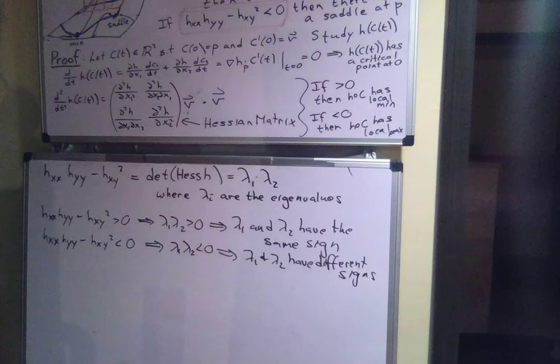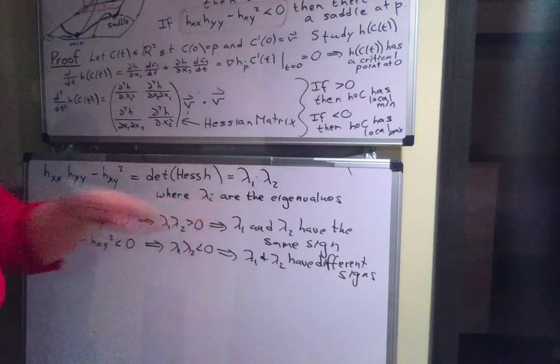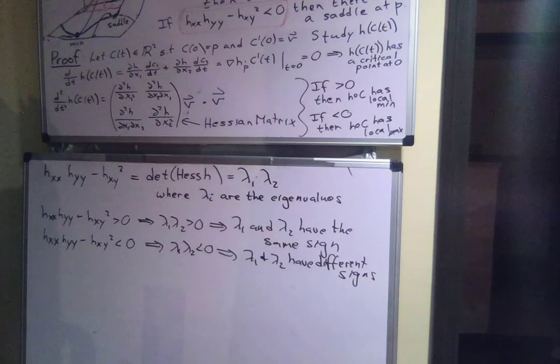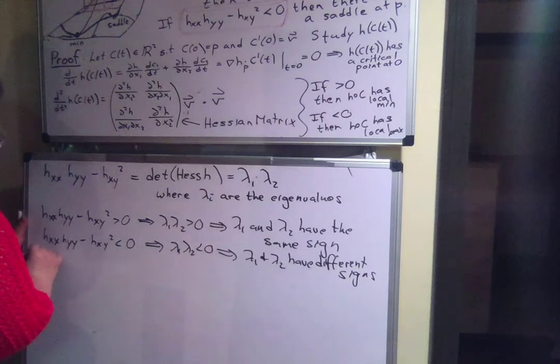So now what can we do with that information? What does the eigenvalues tell us? So one thing to remember is what is an eigenvalue? An eigenvalue is a value such that, recall, we can find eigenvectors.